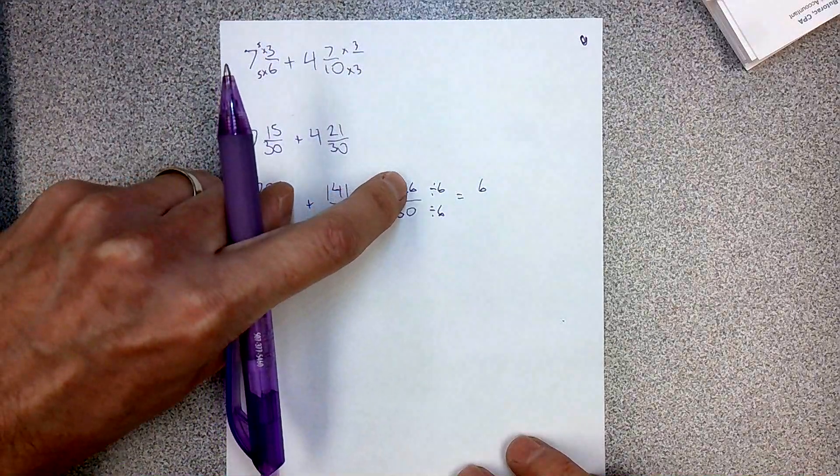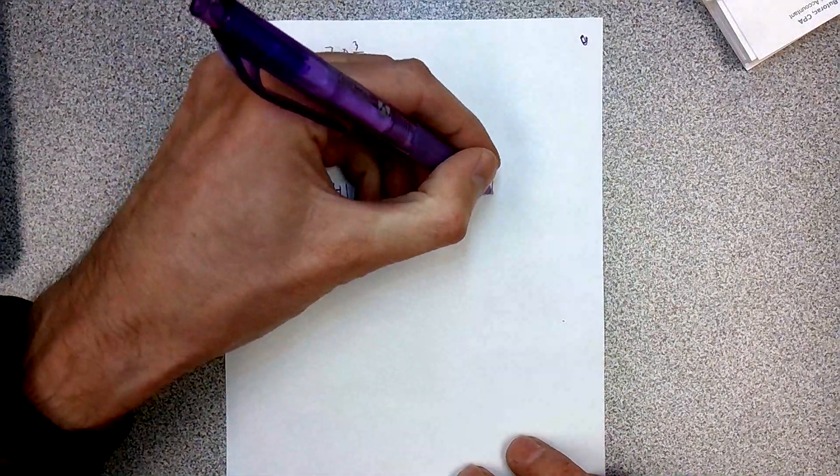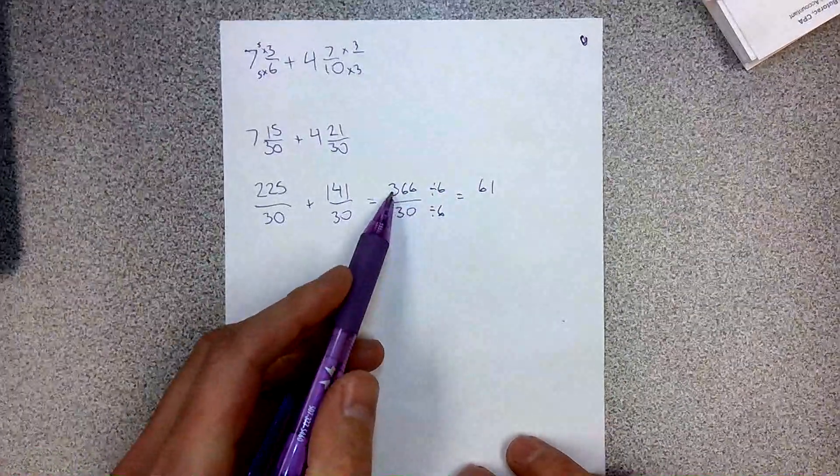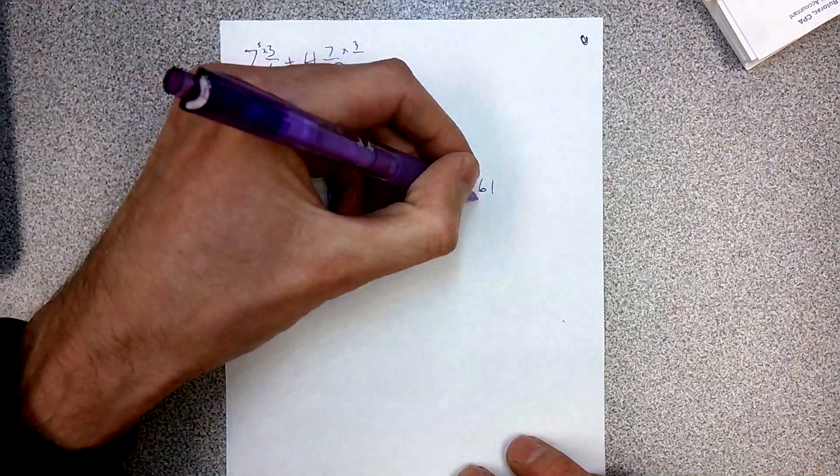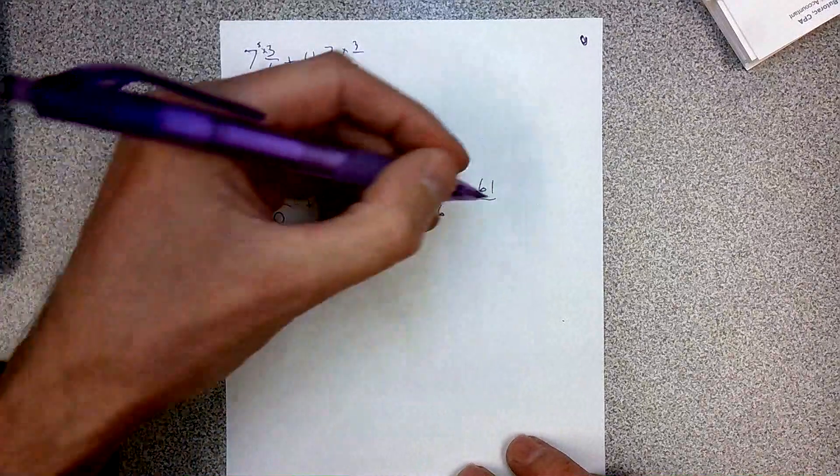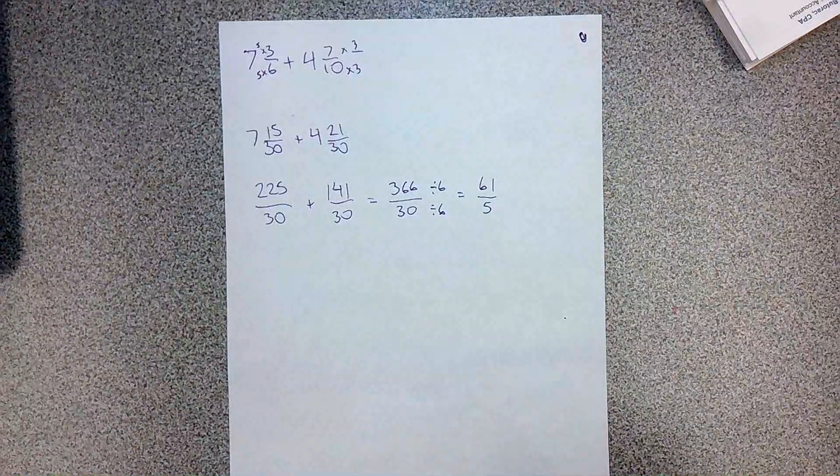So 366 divided by 6 is 61. 30 divided by 6 is 5. We got our answer.